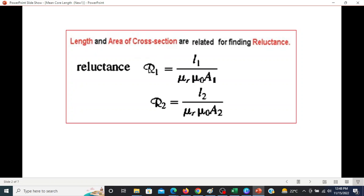And how to calculate the increase in area due to fringing effect. So if you keep this formula in mind, one thing will be clear: for let's say R1, we are using L1 and then area A1. For R2, we are using length L2 and area A2. That means the length and the area of cross section, they are related. So for every change in area, we have to find a new length.